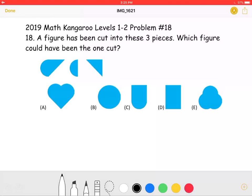So as we can see in the picture, the figure was cut into these three shapes, and there are a total of two curved sides. And that's what we'll keep track of in the answer choices to determine which one it could have been cut from.